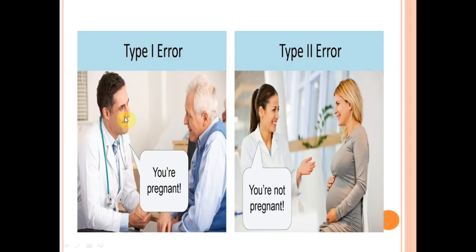The positive or negative refers to pregnancy. We are giving a false positive pregnancy result to the male, and a false negative pregnancy result to the woman who is actually pregnant. So Type 1 is always false positive and Type 2 is always false negative. This example is the best way to get the concept, as pictures are the easiest way to learn Type 1 and Type 2 errors.